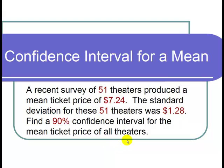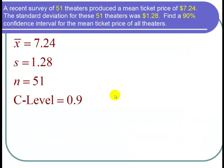So let's begin by writing down our cast of characters. We have that the mean ticket price was $7.24. That's the mean of the survey, so x-bar is equal to 7.24. The standard deviation for these 51 theaters was $1.28. Since we're talking only about these 51 theaters and not all theaters, this is a sample standard deviation. So s is equal to 1.28.